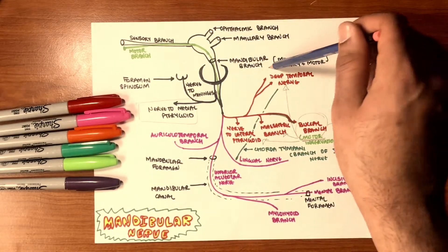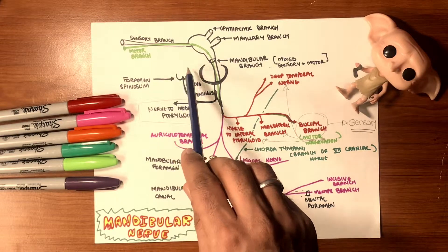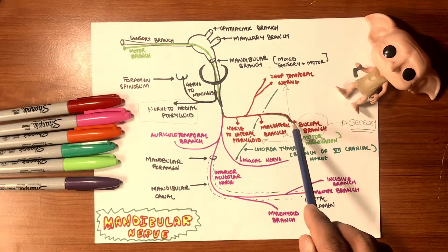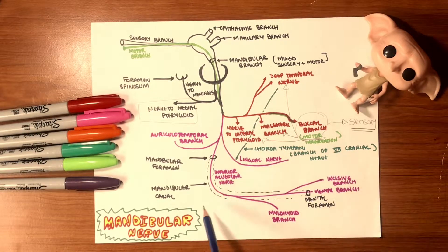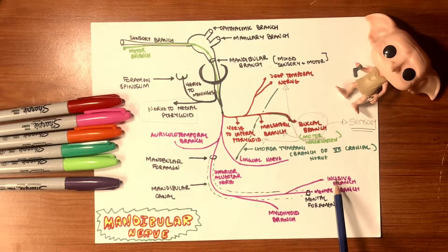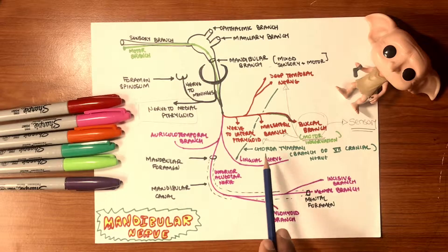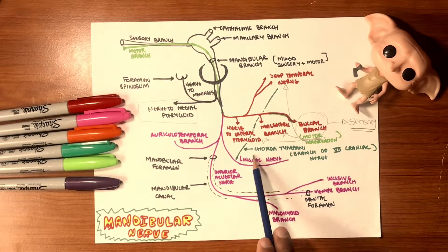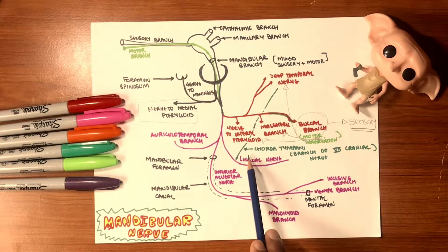To summarize the schematic: the mandibular nerve — mixed, sensory and motor — exits foramen ovale. From the main trunk: nerve to meninges (re-enters via foramen spinosum) and nerve to medial pterygoid. Anterior trunk: buccal nerve (only sensory), and all others motor. Posterior trunk: auriculotemporal, lingual, and inferior alveolar nerves. The lingual nerve is accompanied by the chorda tympani, a branch of the facial nerve, which provides sensory and secretomotor innervations to the tongue and the submandibular and sublingual glands.